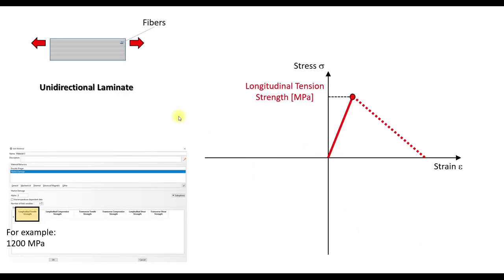For example, we have here a unidirectional laminate loaded by tension. Here we have a stress-strain curve, and the maximum value is the longitudinal tension strength. This is the first value in the Abaqus user interface for Hashin damage - for example, it is 1200 megapascals. Now I will show a short clip of a tensile test of a composite specimen.